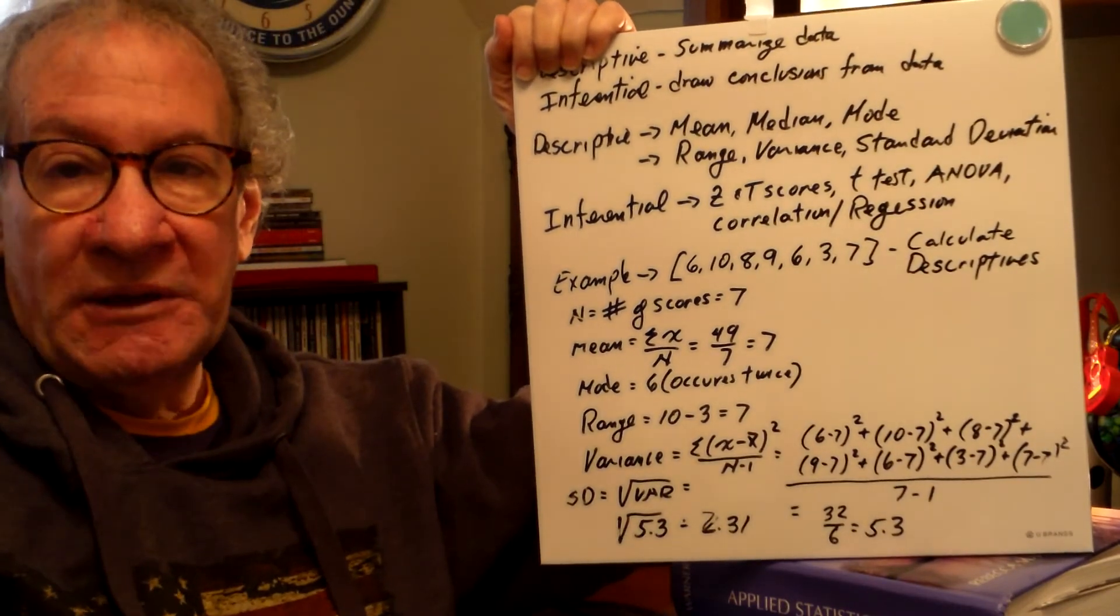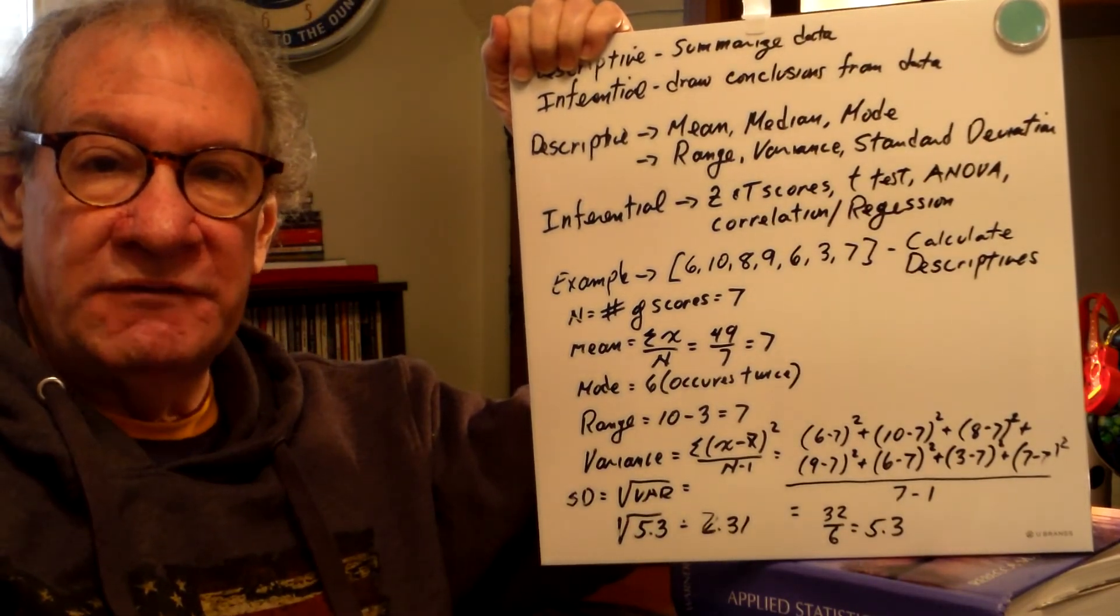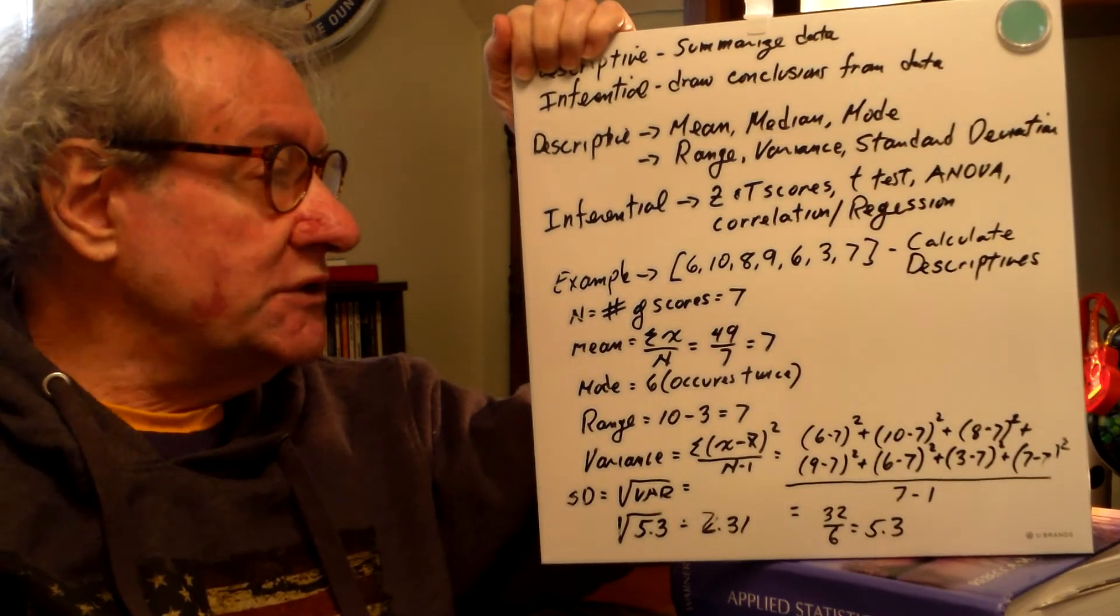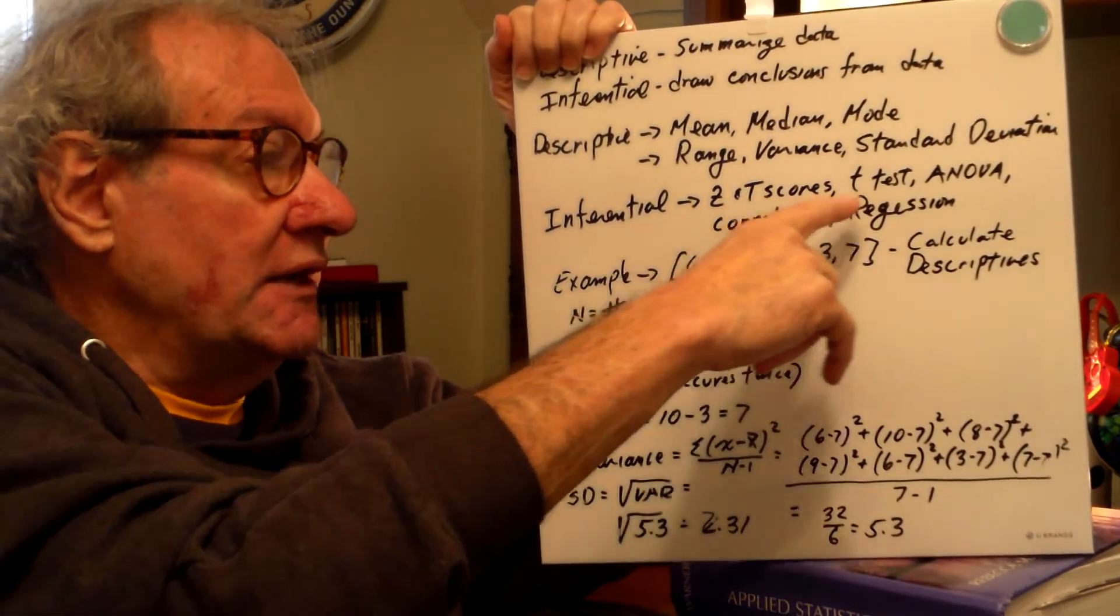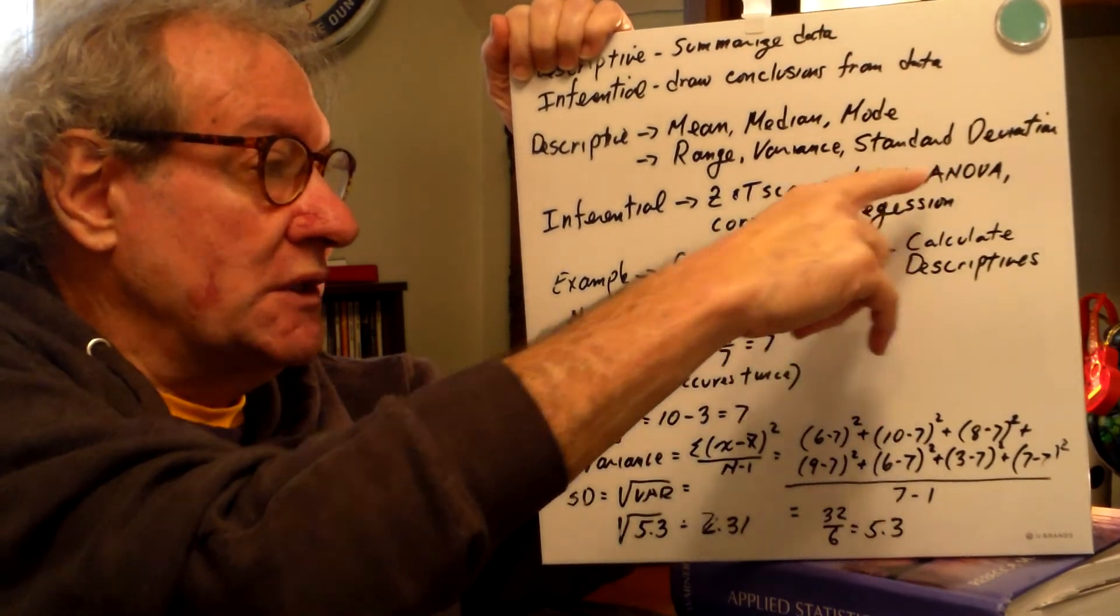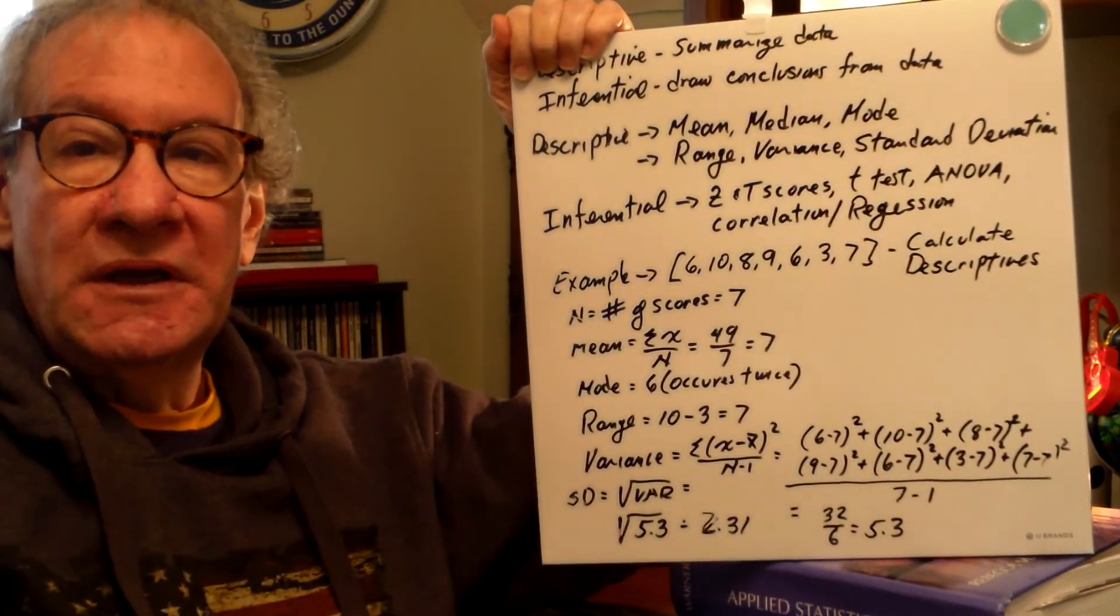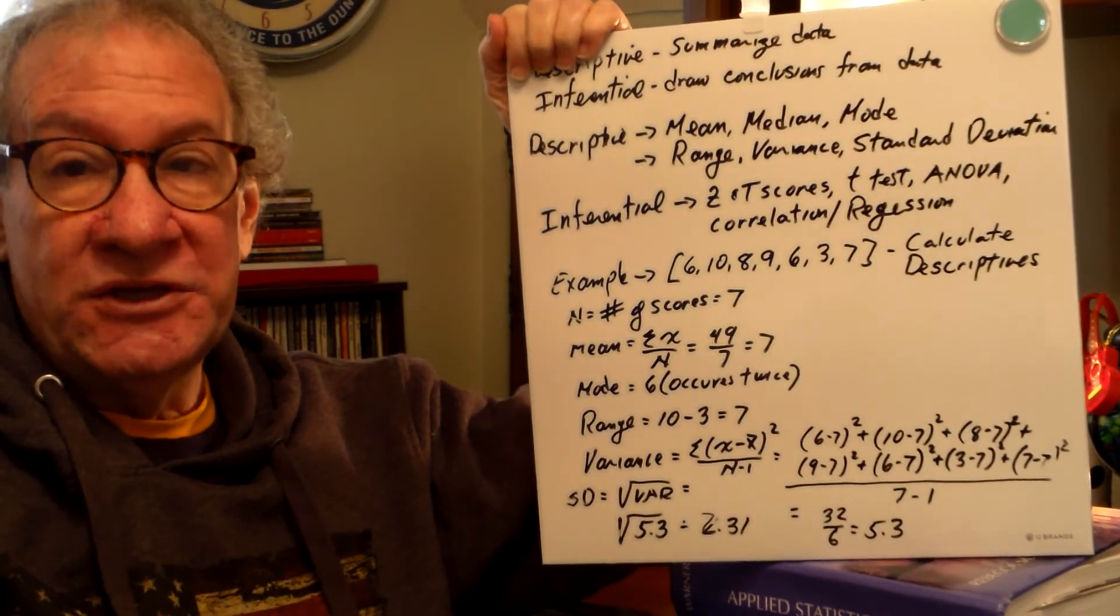So I hope that was helpful to you, and I will come back in the second video, and we will continue with this example looking at z-scores and t-scores, and then some information about the four major kinds of basic inferential statistics. Thank you.